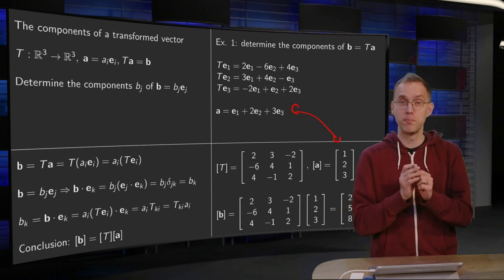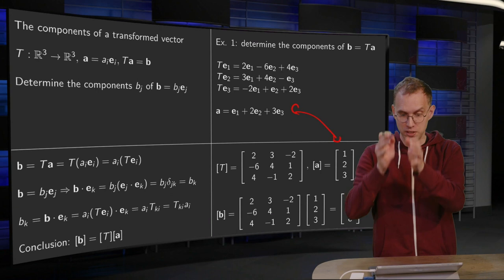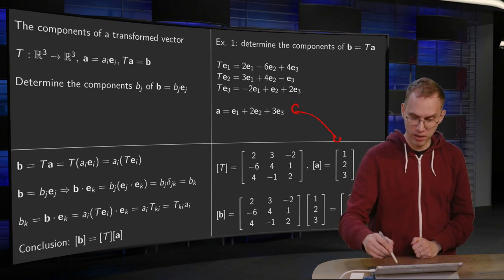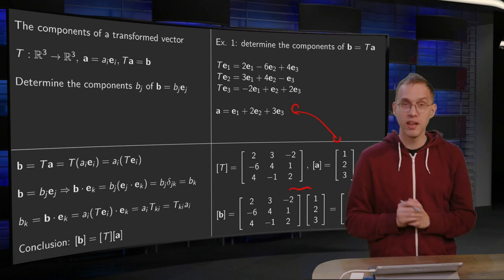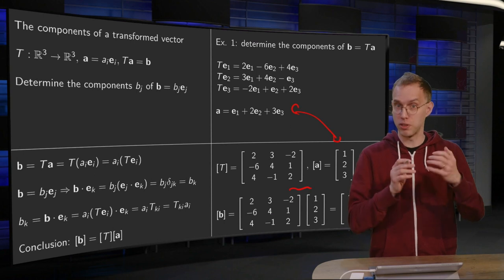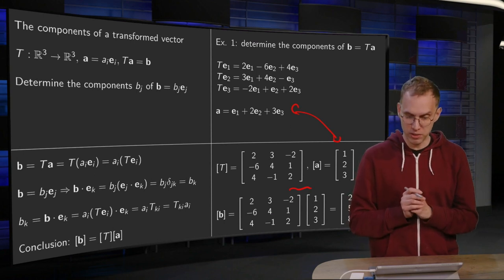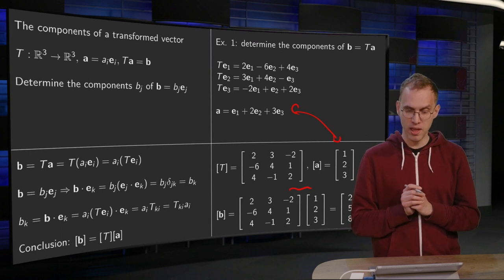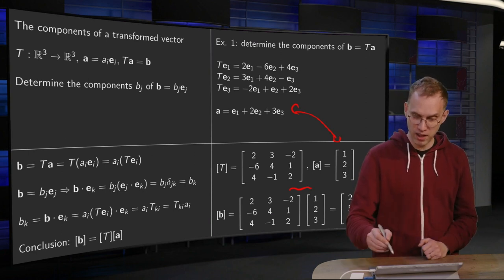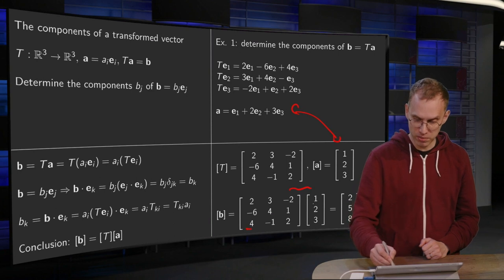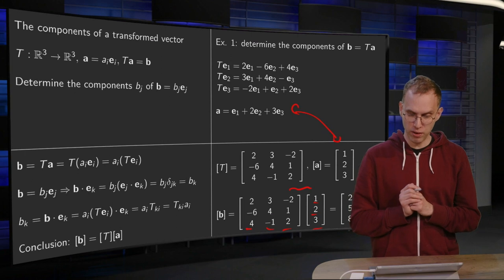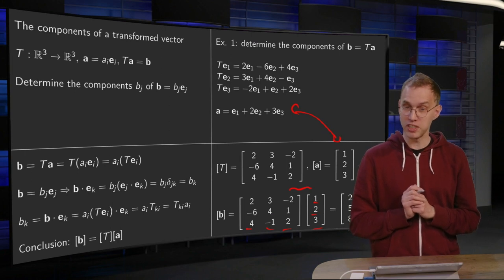And B is just the product of matrix T times the vector A over here, and you can compute this using, for example, the row column rule. So you get 2 times 1 plus 3 times 2 minus 2 times 3 equals 2, minus 6 plus 8 plus 3 equals 5. And 4 times 1 minus 1 times 2 plus 2 times 3. So 4 minus 2 equals 2 plus 6 equals 8.